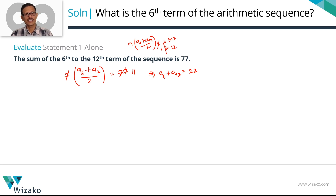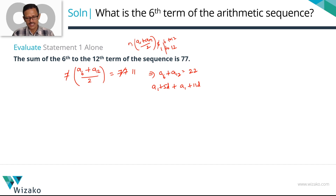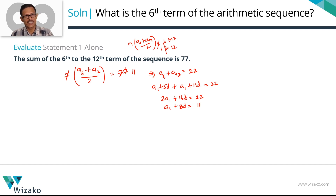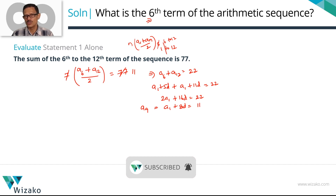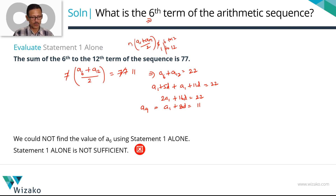Whenever you're stuck in arithmetic progression, write all terms in terms of the first term and common difference. Writing a_6 = a_1 + 5d and a_12 = a_1 + 11d, and substituting into a_6 + a_12 = 22 gives 2a_1 + 16d = 22. Dividing by 2: a_1 + 8d = 11. Since a_n = a_1 + (n−1)d, this is a_9 = 11. From statement 1, we know only the 9th term. Since we need the 6th term and we don't know the common difference, statement 1 alone is not sufficient.